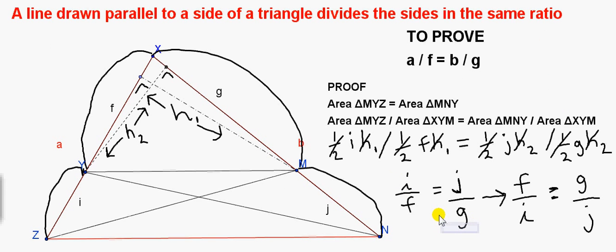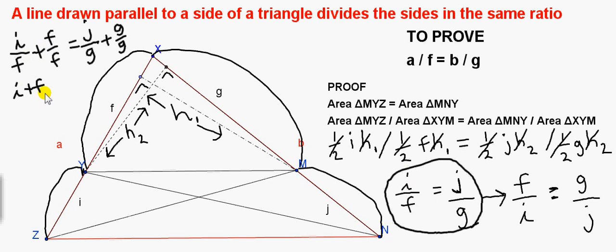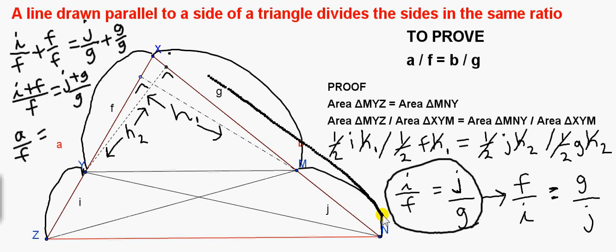Now let's go back to what we had originally — I over F equals J over G — and add 1 to both sides of it. Writing 1 as F over F on the left and G over G on the right, we get I plus F over F on the left, and J plus G over G on the right. But I plus F is just A, giving A over F. And J plus G is just the total distance B, giving B over G. So A over F equals B over G, and that's what we had to prove.